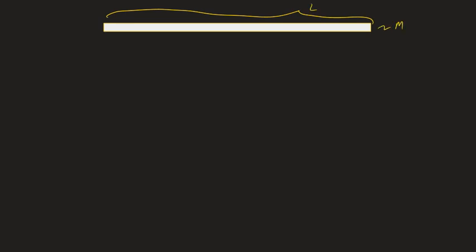I put together a chart — it had five things on it. I talked about the fact that if you had a rod of length L and mass M, depending on how you spin it determines which moment of inertia to use. Spinning it about its end: moment of inertia is one-third ML squared. About its center: one-twelfth ML squared. Then we went on to other shapes — rings, discs, hollow spheres, and solid spheres.